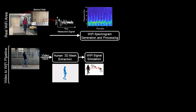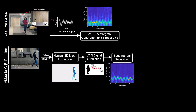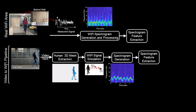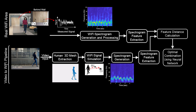Going back to our video-to-Wi-Fi pipeline, where we showed how to translate the video content to the RF domain, we similarly generate the corresponding spectrogram for the simulated video-to-Wi-Fi signal. We then extract several relevant features from both spectrograms and properly combine them to decide if the person in the video is the same as the person behind the wall.